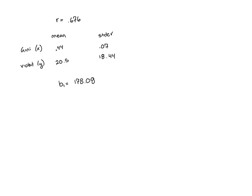After we've found our slope, the next step is to go ahead and find our y-intercept, that is b0. To find b0, we need to take y-bar minus b1 times x-bar.